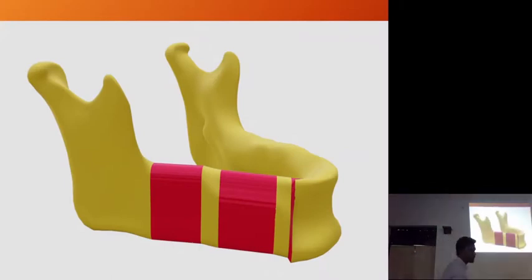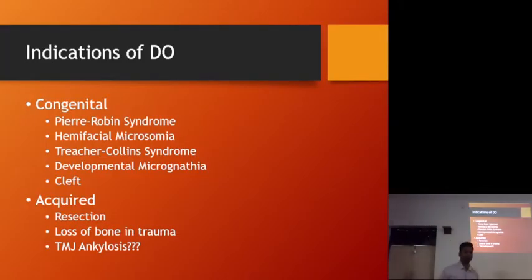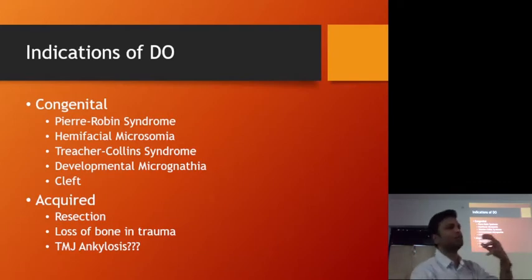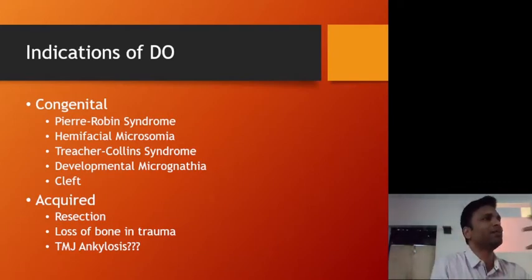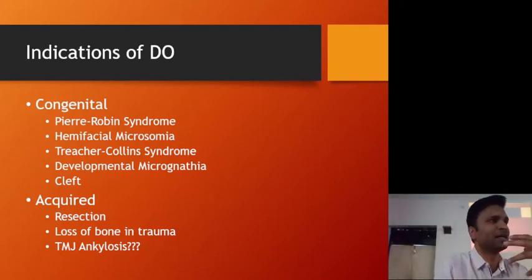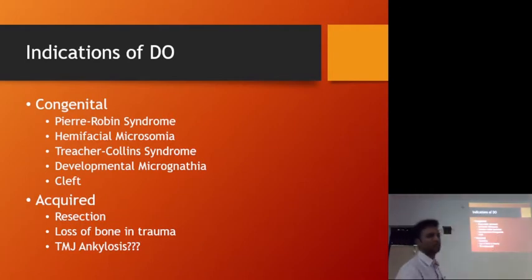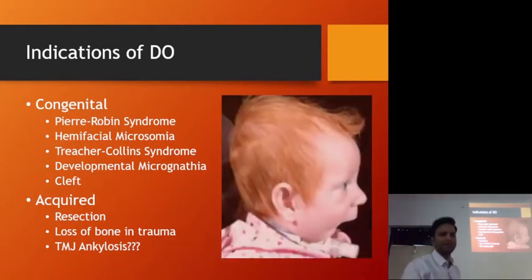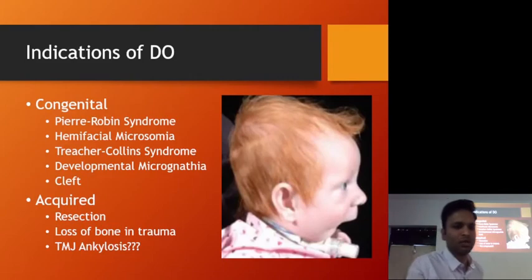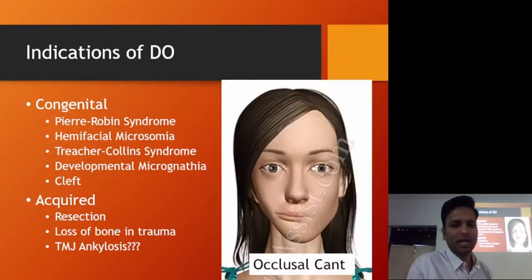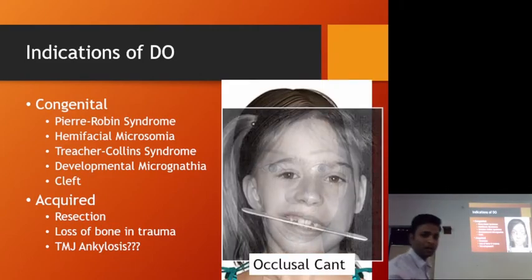Now we come to the indications of distraction osteogenesis. Basically any condition that leads to a defect in bone — a bony defect — we are going to use distraction osteogenesis. In congenital cases, we have Pierre Robin syndrome and hemifacial microsomia.